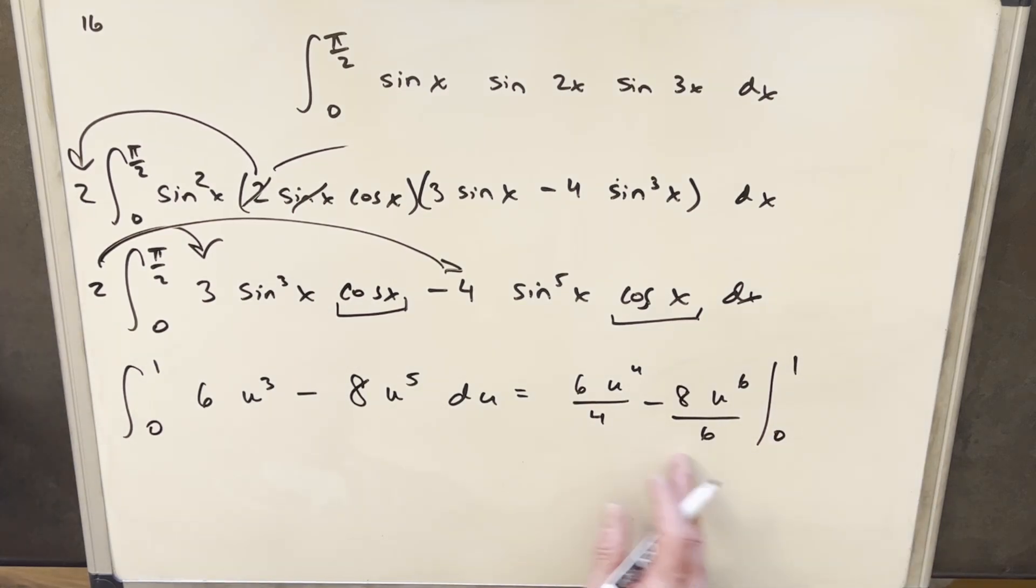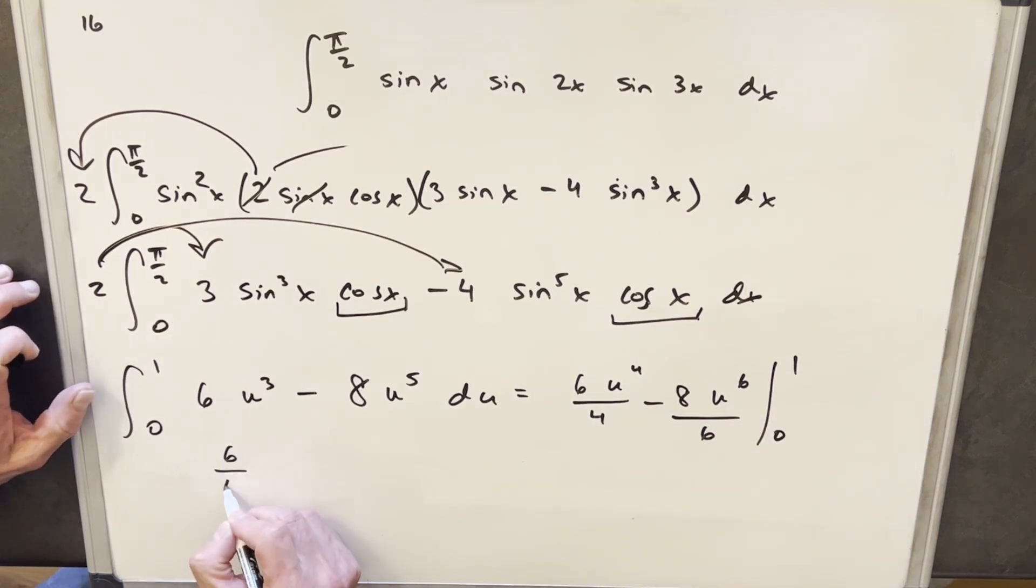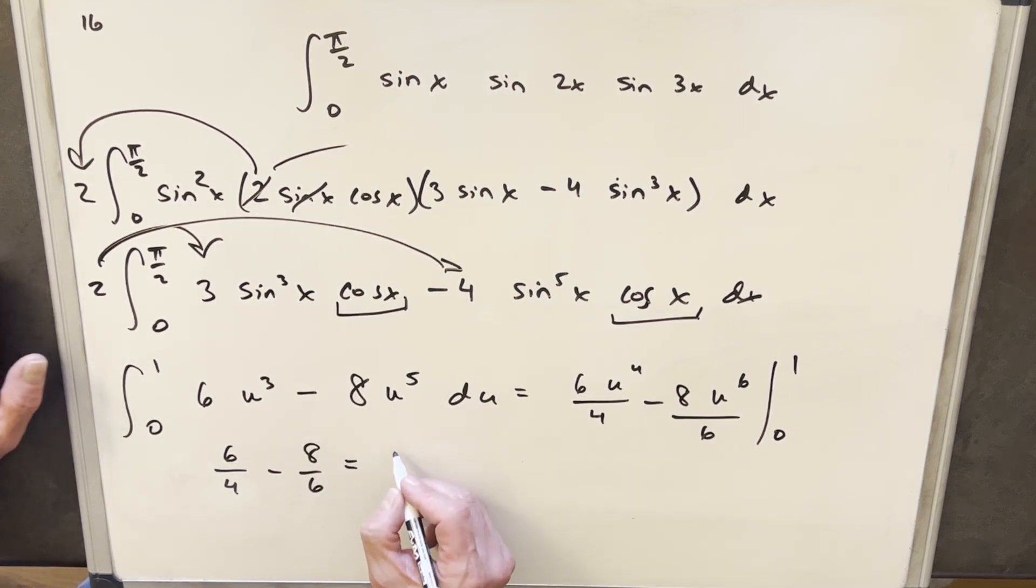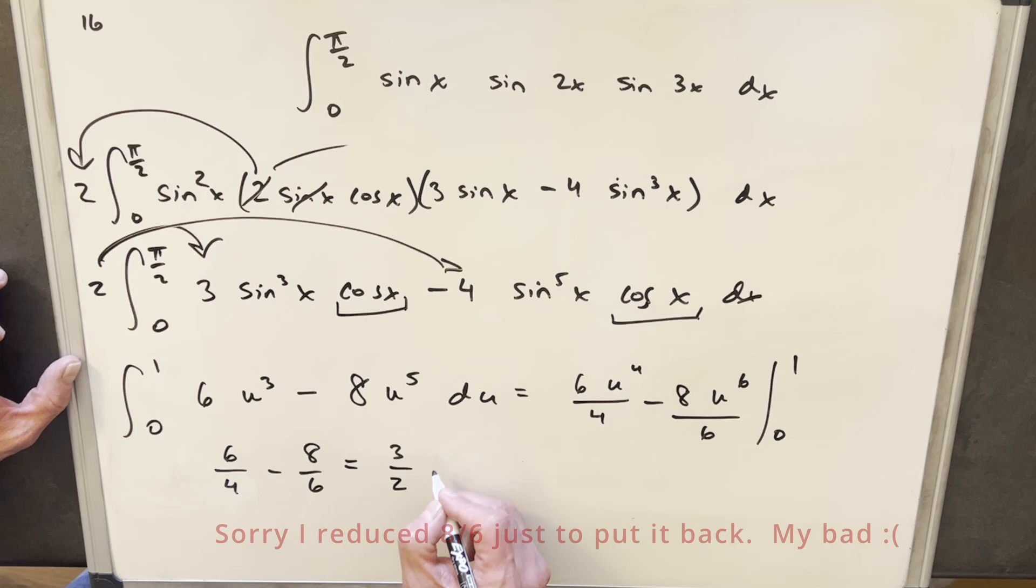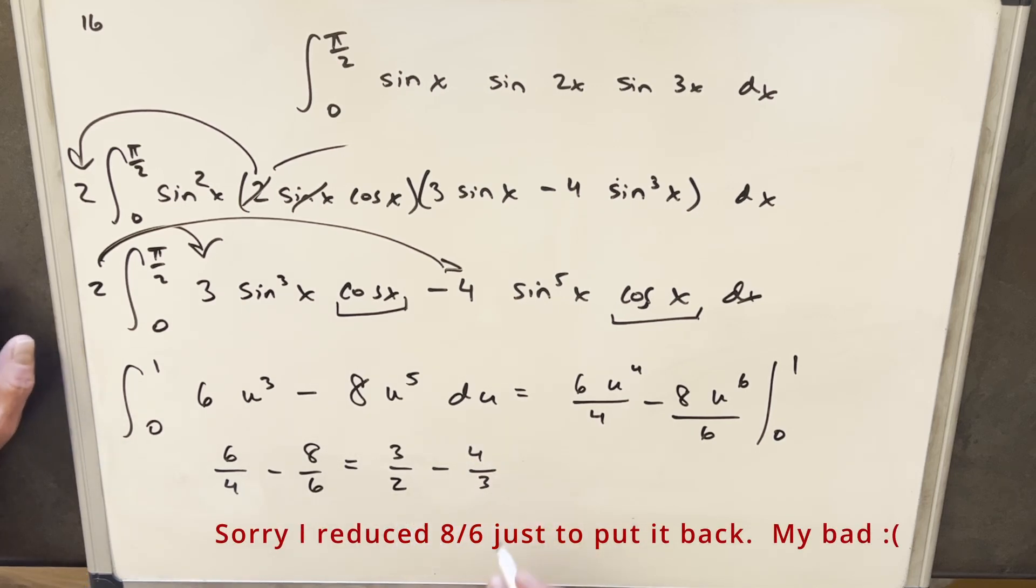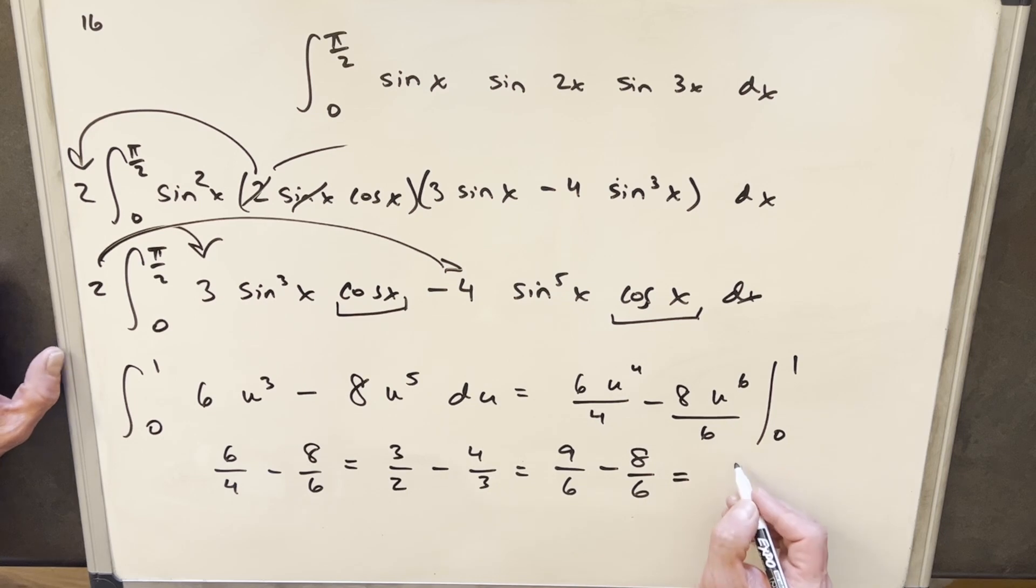Clearly when we plug in 0, it's going to be 0, because each term is going to be 0, so we're really just plugging in 1 here, so we're going to have just 6 over 4 minus 8 over 6. I think I will just reduce this, so that's the same thing as 3 over 2 minus 4 over 3, and we'll get a common denominator, so it's going to be 9 over 6 minus 8 over 6. So our final solution is just going to be 1 over 6.